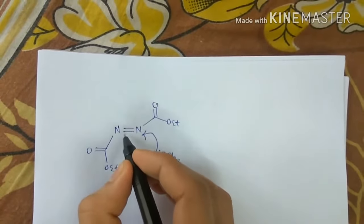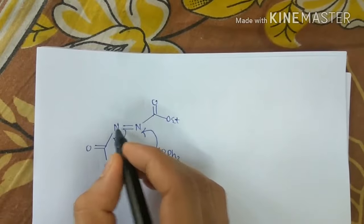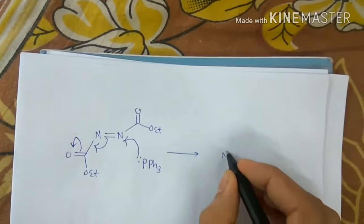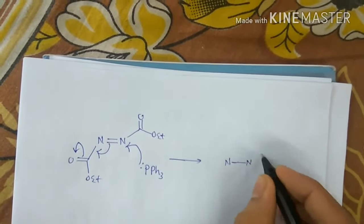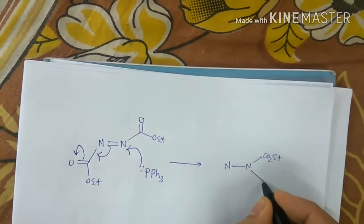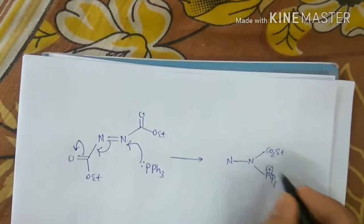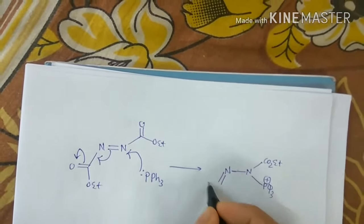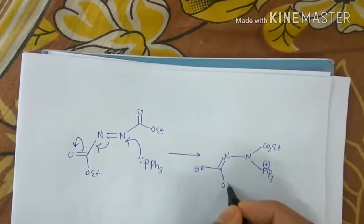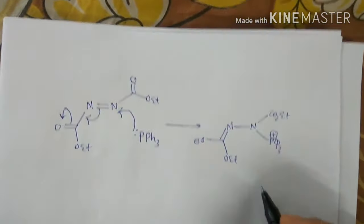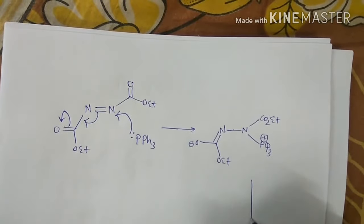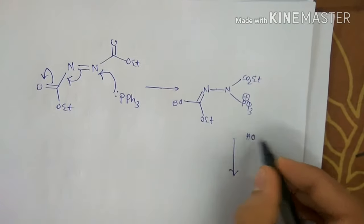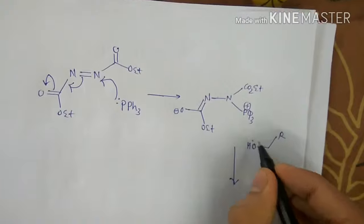This triphenylphosphine will attack the electrophilic nitrogen of DEAD, and the negative charge developing here would be stabilized by the carbonyl group — the CO2Et group. This gives us a positively charged phosphorus intermediate.